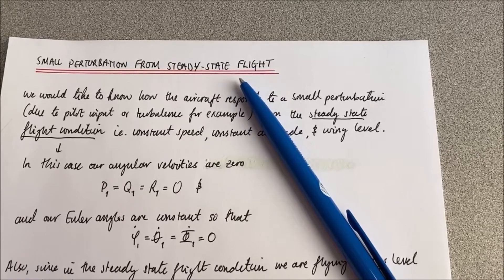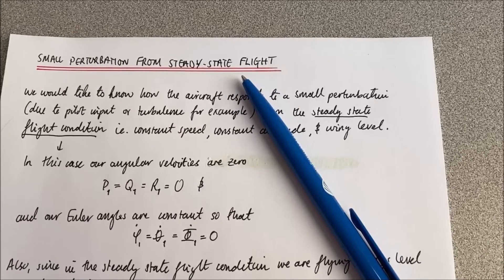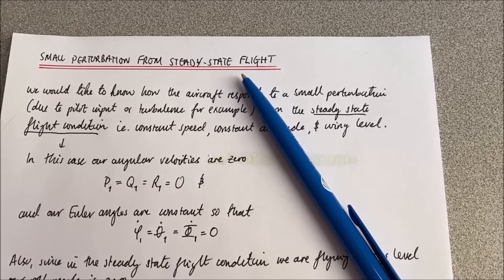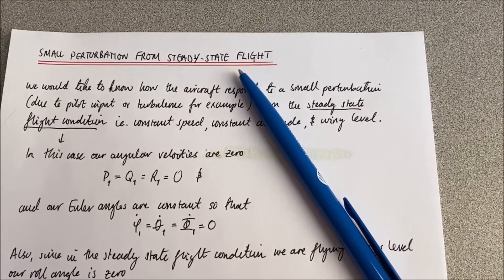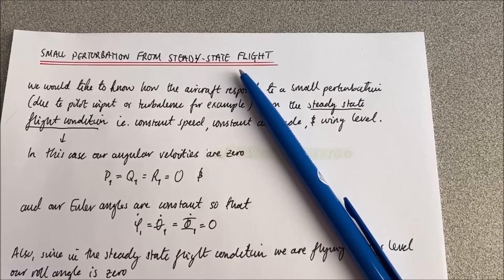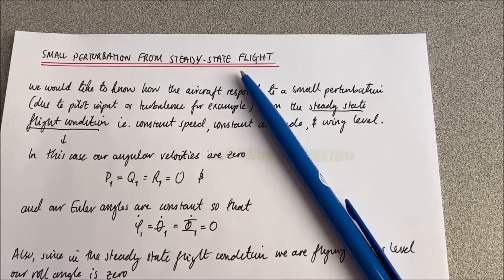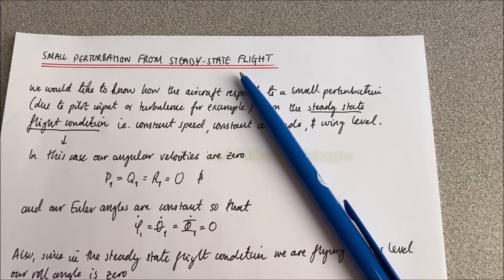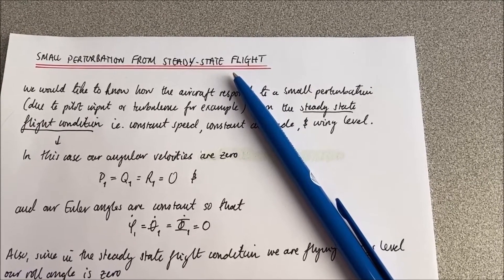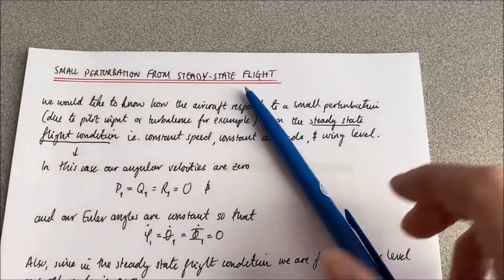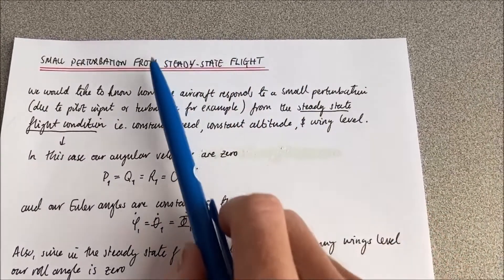For us to keep the aircraft in that steady state flight condition that we started with, we must reduce the pitch angle to reduce the lift and therefore also reduce the drag. So that's what the steady state flight conditions tell us - it tells us how to keep the aircraft flying with that particular flight condition.